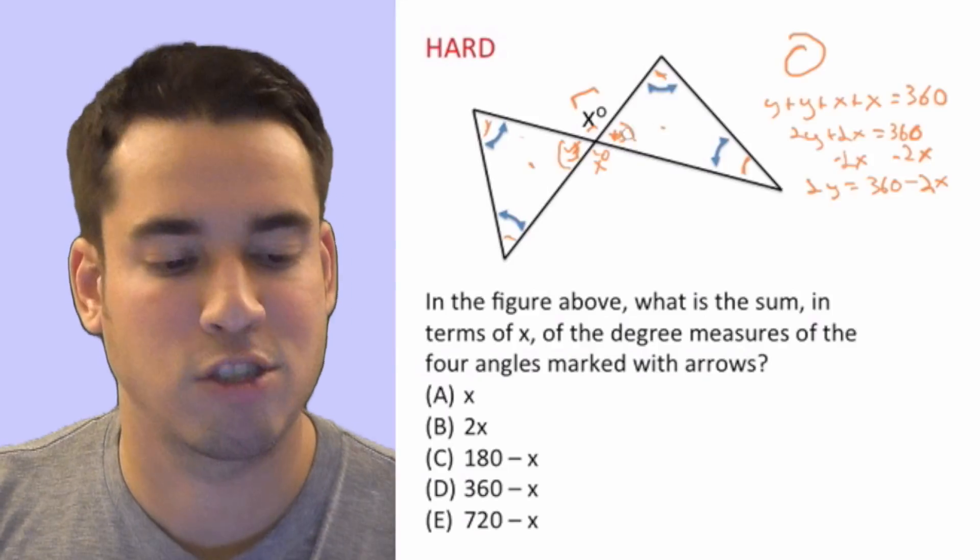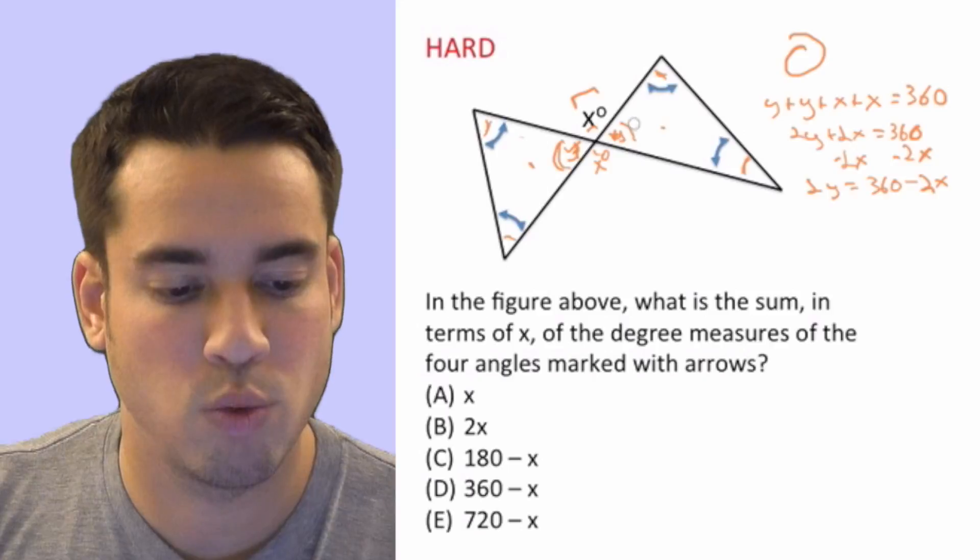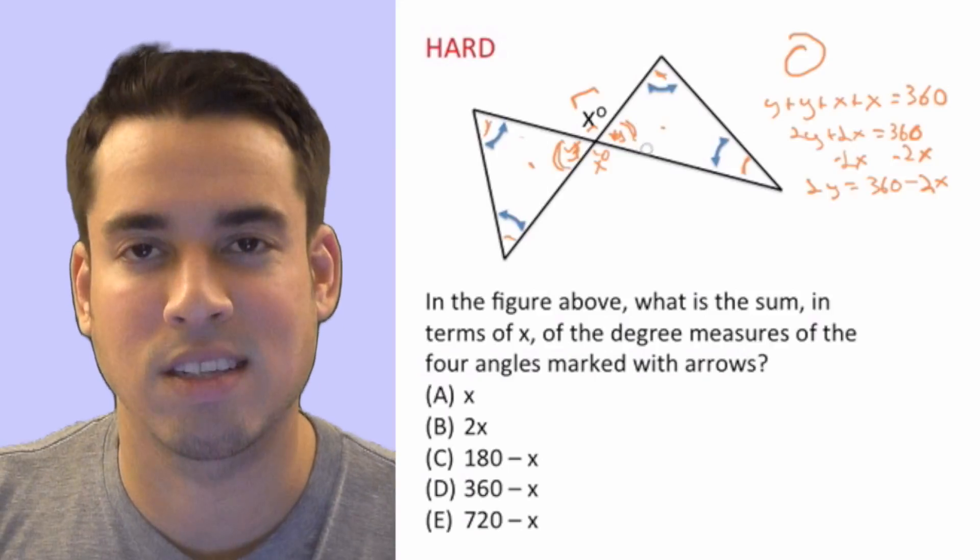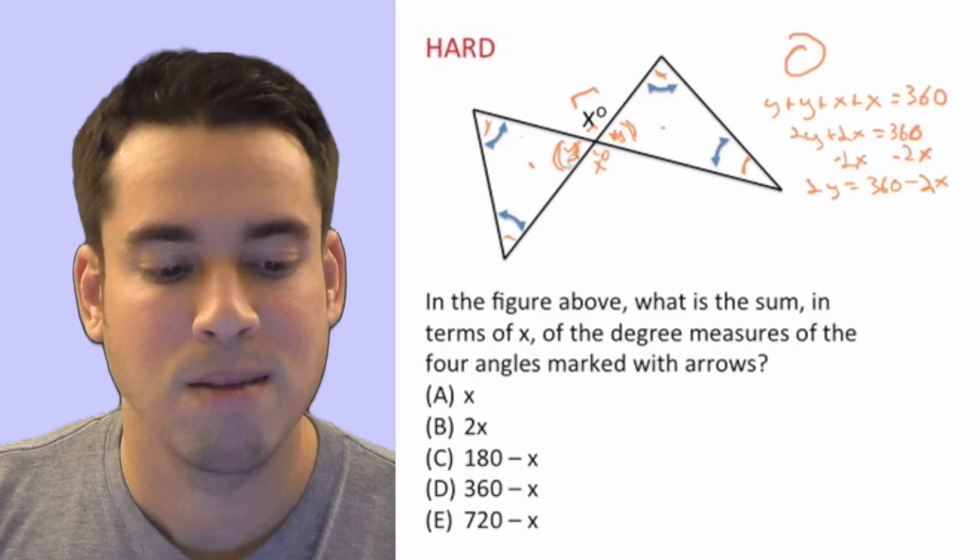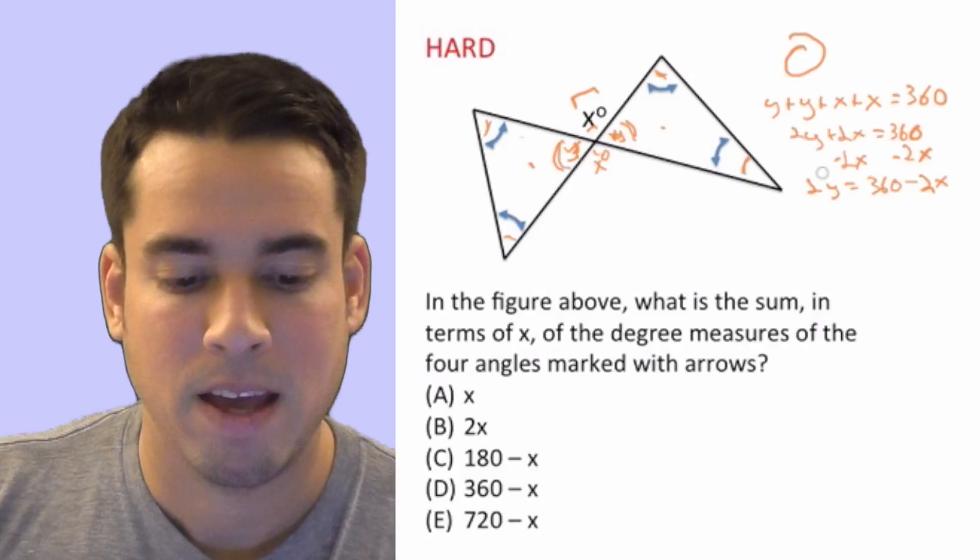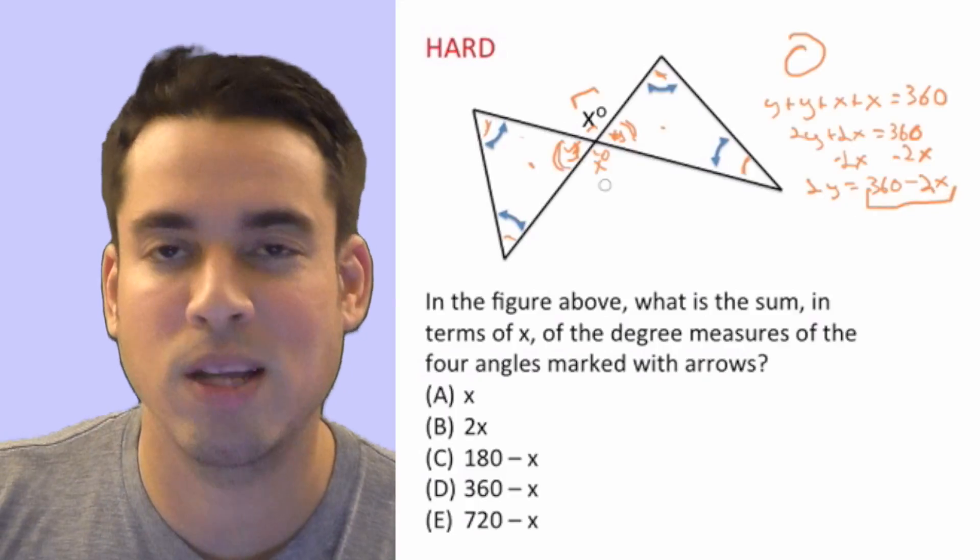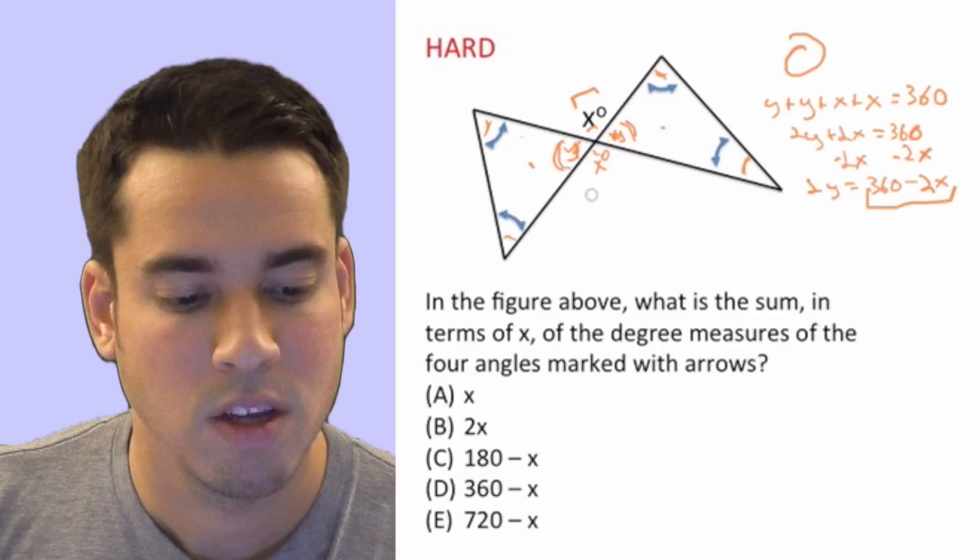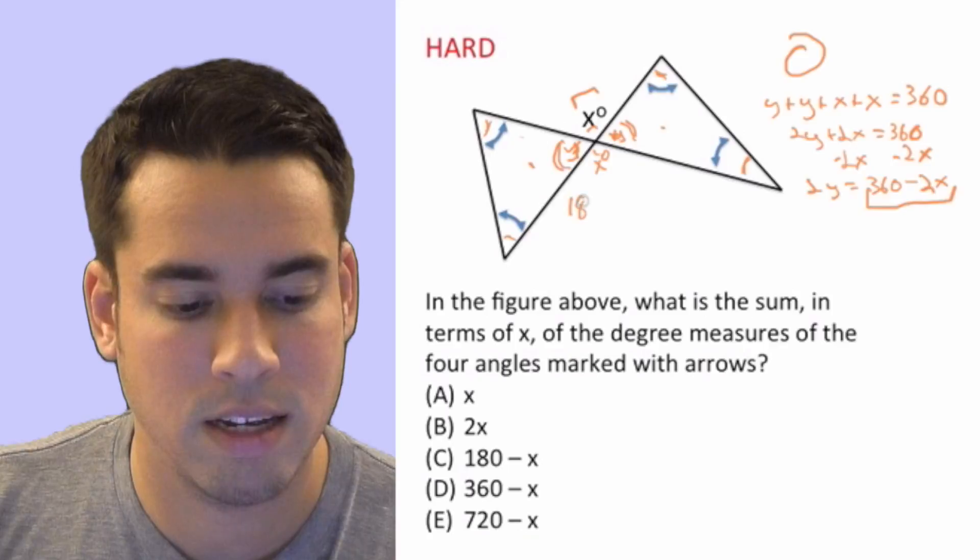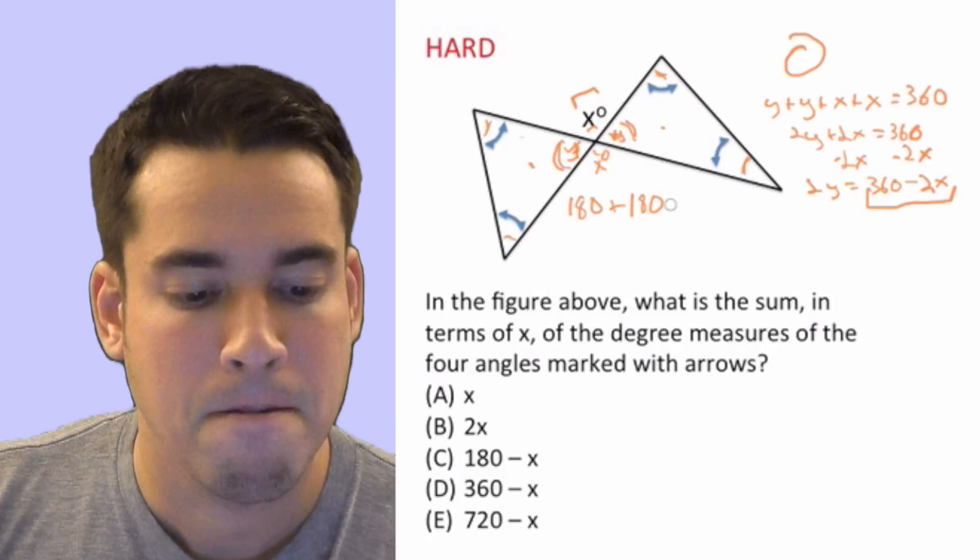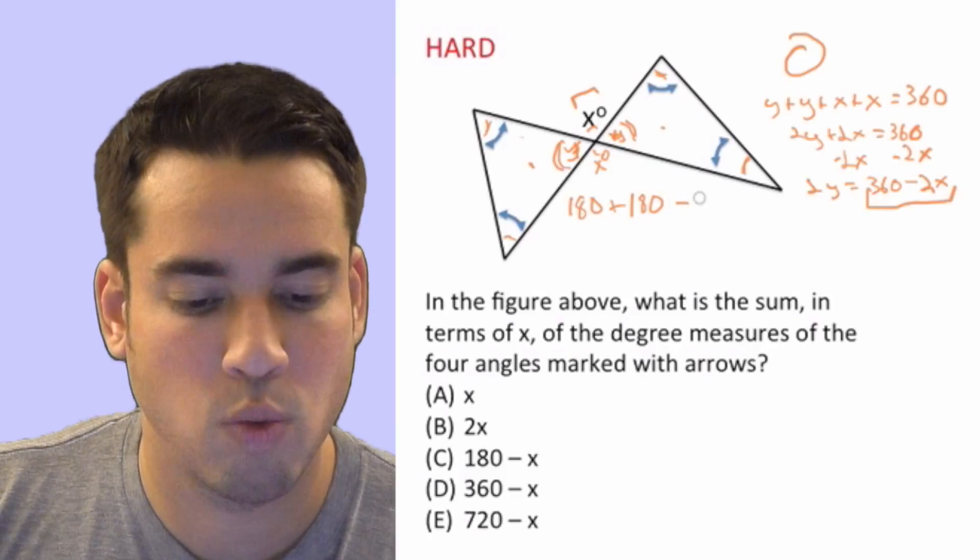All we need to do after that is subtract these two y's. So basically we just take 360, right? 180 plus 180 minus 2y. And then all we have to do is plug in this value here for 2y. So let me write that out, seems a little complicated. Remember, we're just taking 180, all the angles in one triangle, all the degrees, excuse me, plus 180, all the degrees in the other, minus that 2y, which we're going to call 360 minus 2x.